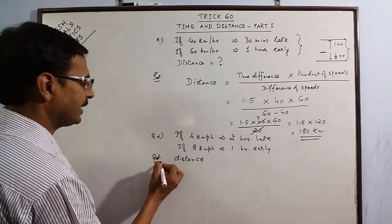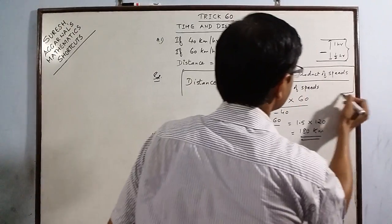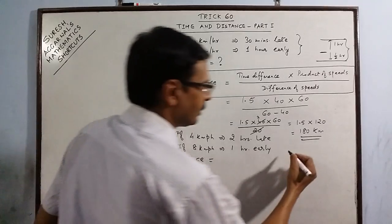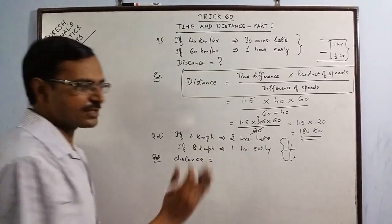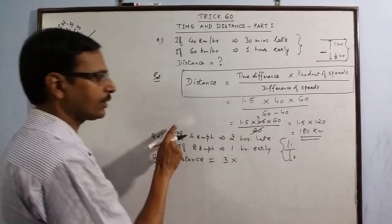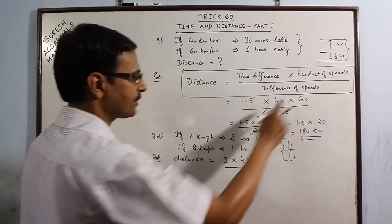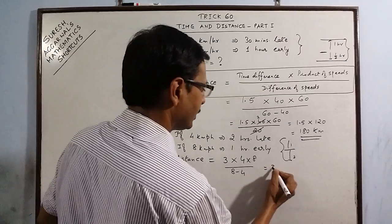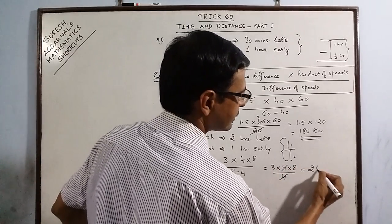Now apply the same concept. Distance is time difference multiplied by product of speeds upon difference of speeds. This is the concept. Time difference: 2 hours late, 1 hour early. So difference between the two is 3, 3 hours multiplied by product of speeds 4 into 8 upon difference of speeds, 4 and 8 difference is 4. So 3 into 4 into 8 upon 4, 4 cancels out, 3 times 8 is 24 kilometers is your answer.